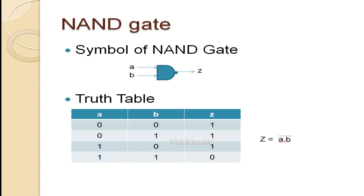For the NAND gate, if you refer to the truth table, when both inputs are 1, output Z will be 0. In all remaining cases, output Z will be 1. Also, if you look closely, whenever A equals 0, output Z will be 1 independent of the value of B. Whenever A equals 1, the inverse of B will appear at output Z.